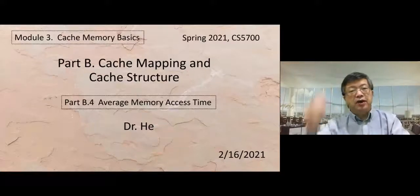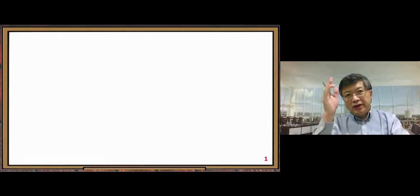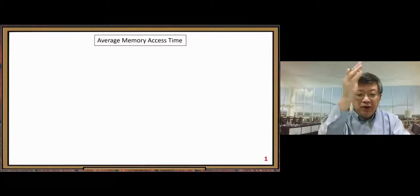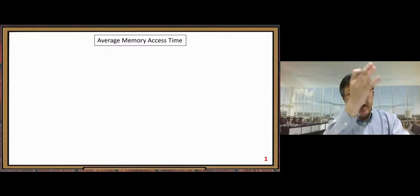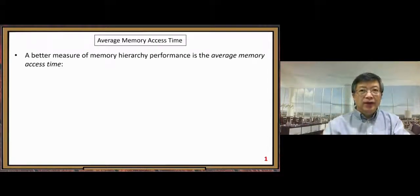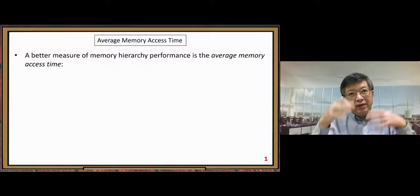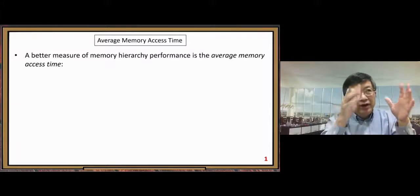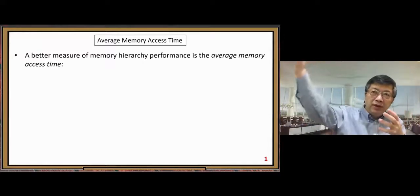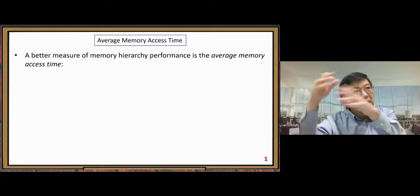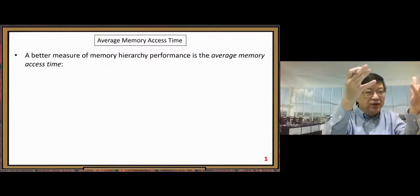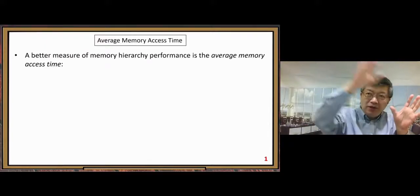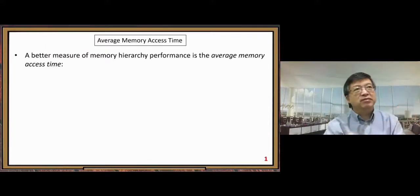Section 3.4 covers average memory access time. We use the memory hierarchy, considering the CPU loading a requested word from main memory using cache. The goal is to get a good average memory access time. Let's look at how we calculate the total average memory access time using that formula.